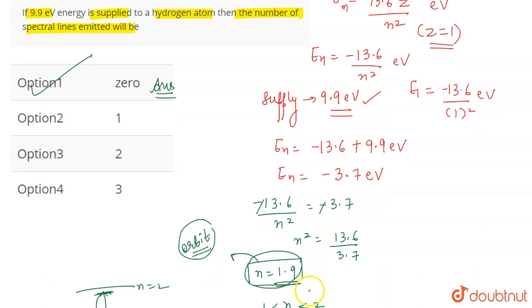Because of this value of n being a decimal, it lies between two n values, two orbit values, but it is not properly in any of the orbits. So it has not been excited properly, and therefore the number of lines will be zero. And that's the correct answer for the question.